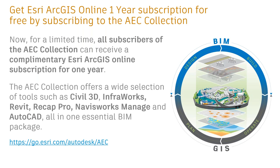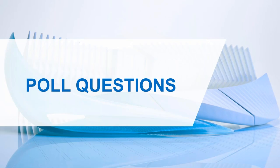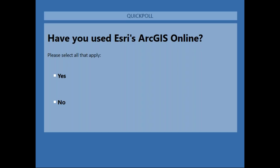Anyone who signs up for the AEC Collection will also be able to access a one-year subscription for Esri ArcGIS. This is a limited offer being made through Esri, and the URL is at the bottom of the screen. We've got a handful of poll questions to get a general idea of your background and interest, so we'll go ahead and launch those now. Please provide a yes or no answer and we'll let them run for about 15 to 20 seconds.